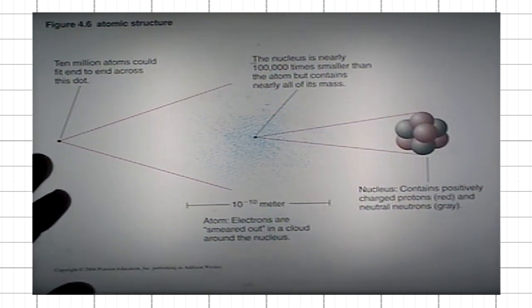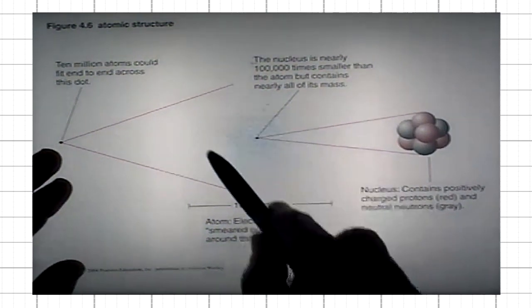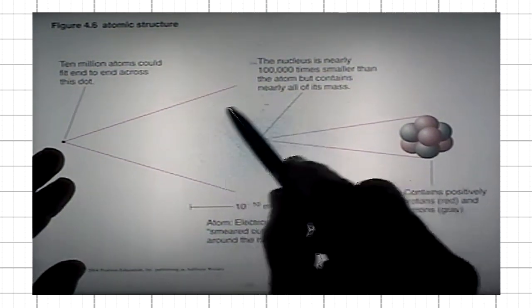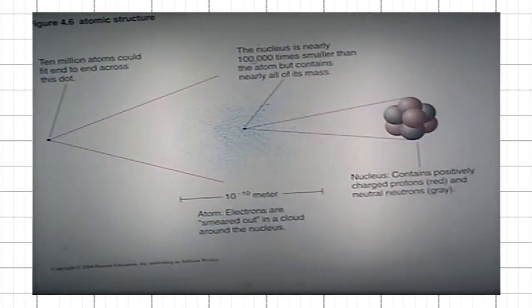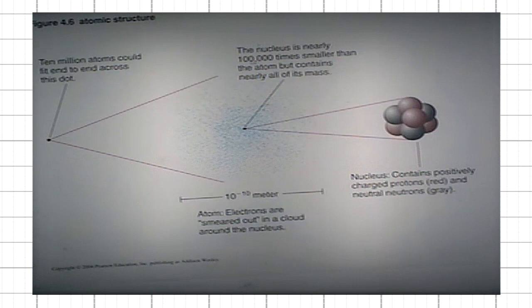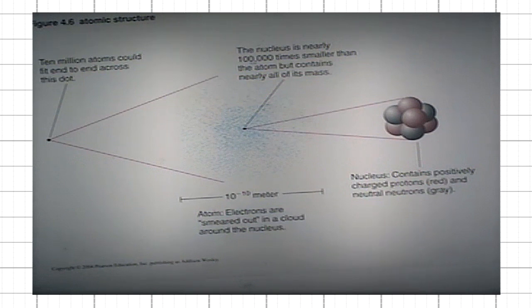Normal atoms are electrically neutral. Electrical neutrality is provided by the electrons that are moving around the nucleus. Each atom has a nucleus which consists of protons and neutrons. Then there are electrons — they are negatively charged, they carry charge opposite to that of protons, and they are bound to the nucleus by attractive electrical force. The electrons move around the nucleus.